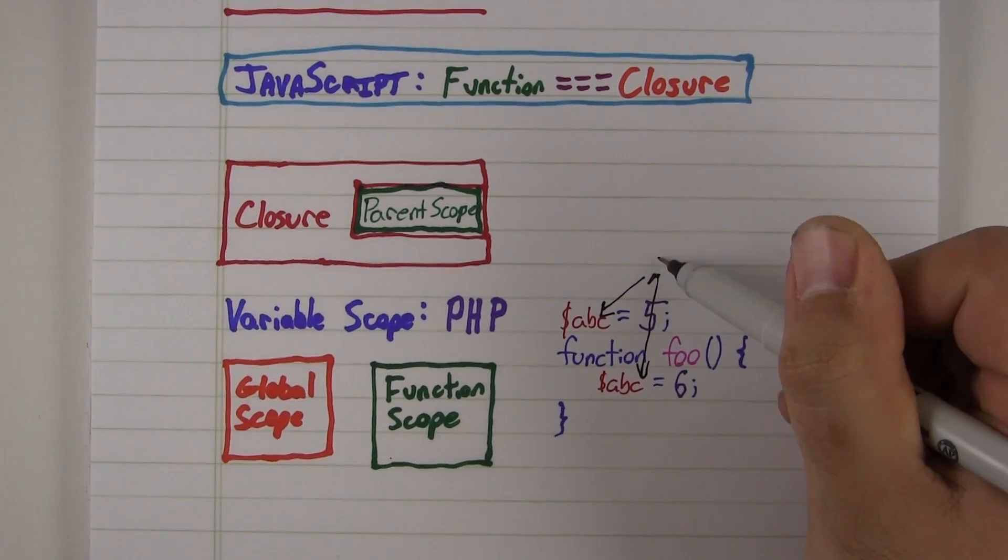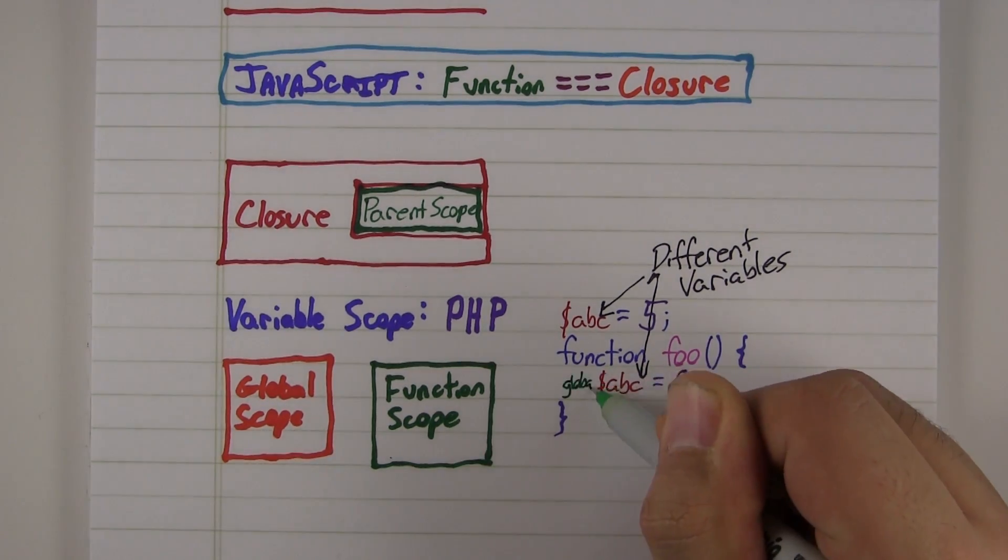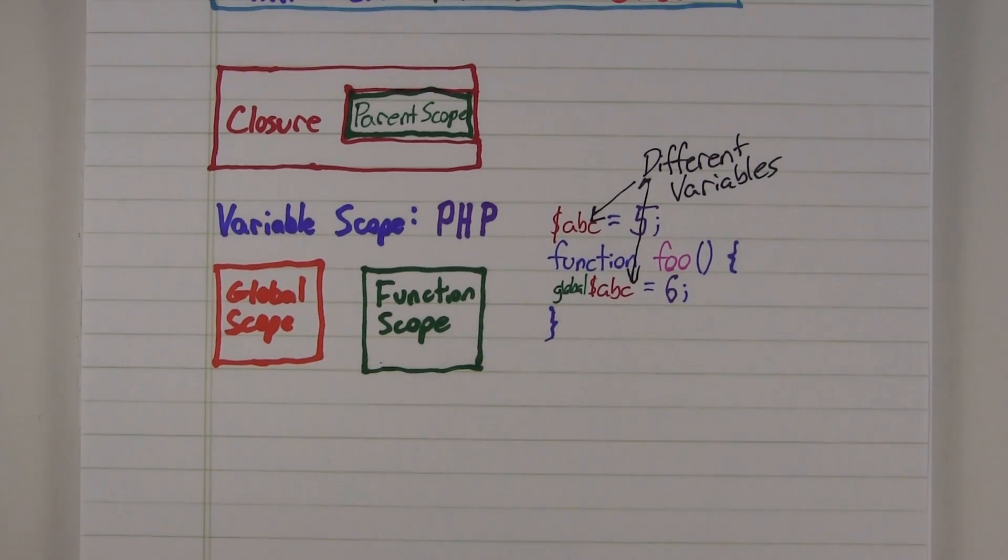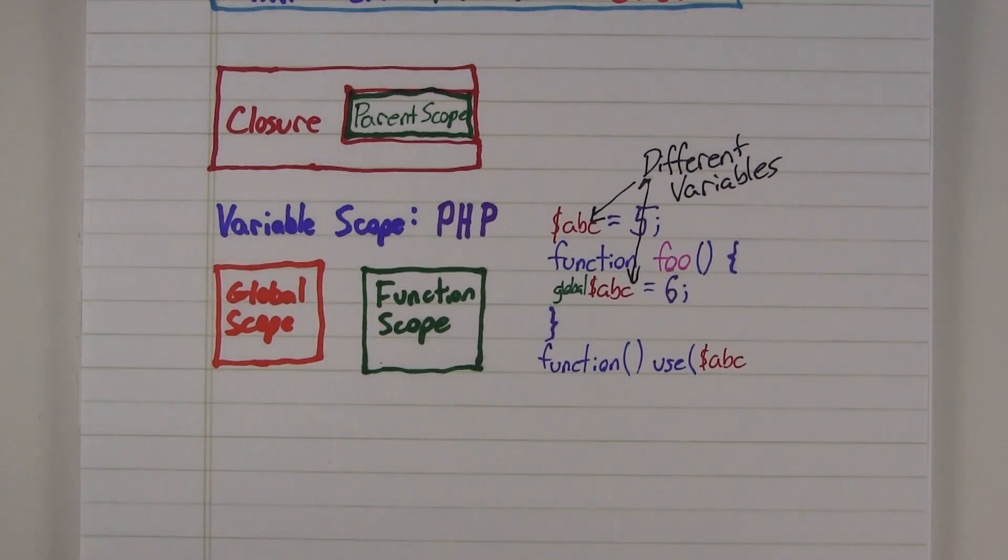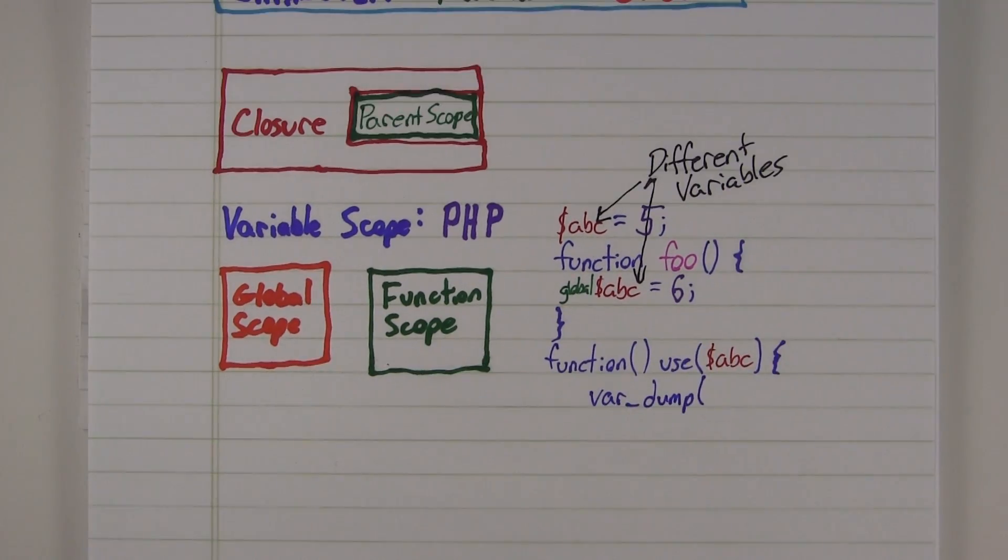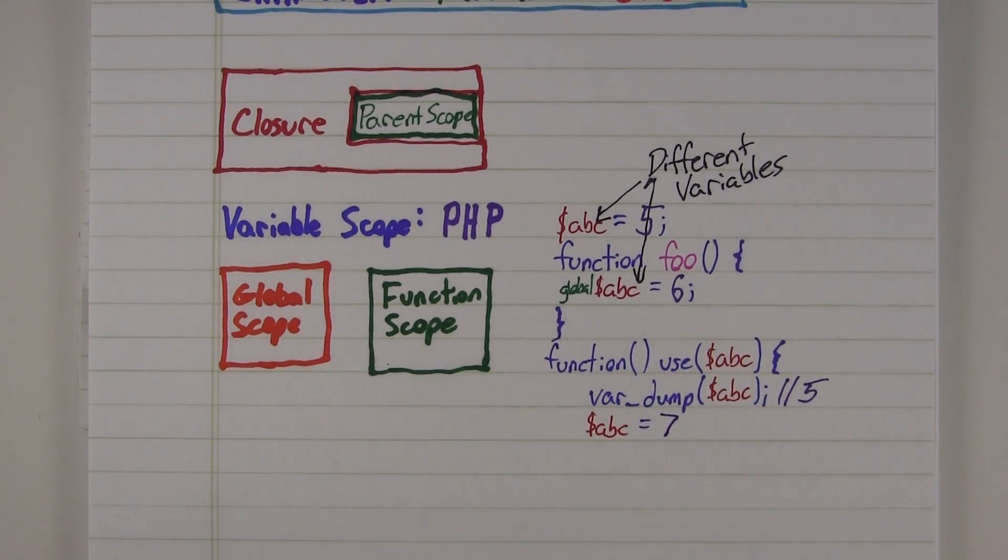If we wanted that variable to be in the global scope, we would need to declare that as our intention. So in PHP, when we declare a closure, we need to explicitly tell PHP which variables to import from the parent scope. The important thing to note here is that the variables are imported.